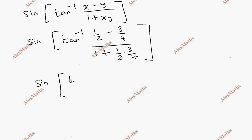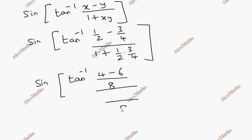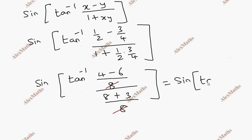Sin of tan inverse: substituting x and y, we get sin of tan inverse of (1/2 minus 3/4) divided by (1 plus 1/2 into 3/4). LCM is 8. Numerator is 4 minus 6. Denominator LCM is 8, giving 8 plus 3. Cancel it all. Result is sin of tan inverse of minus 2 by 11.